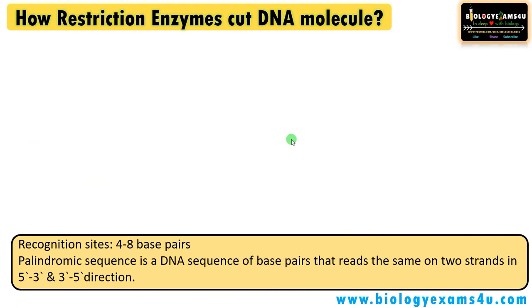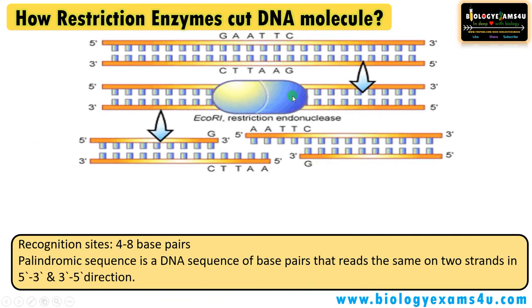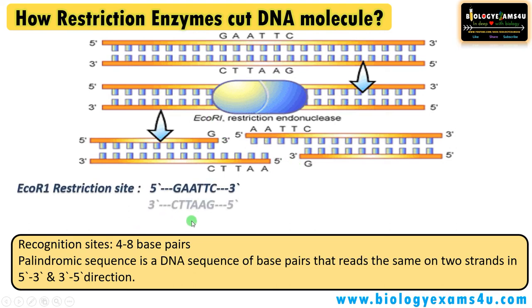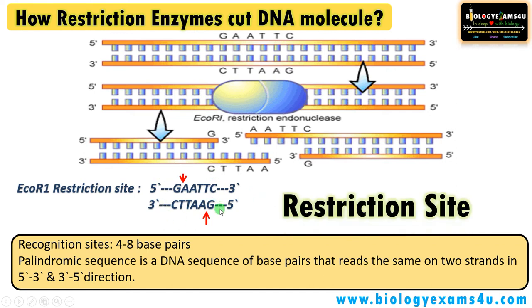Let's take EcoRI as an example. EcoRI is a restriction enzyme isolated from Escherichia coli R1 strain. This endonuclease recognizes the specific sequence GAATTC, called the recognition sequence or restriction site. The enzyme makes a cut after G on one strand and before G on the other strand.